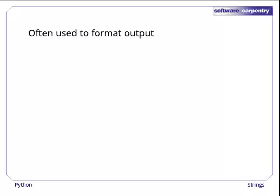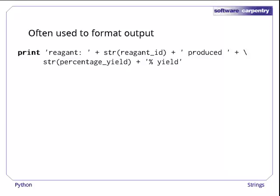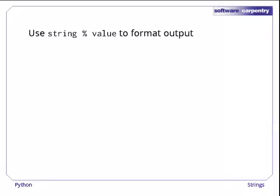Novices often use string concatenation to format output. Here's an example. We concatenate three constant strings and the string representations of two numbers to produce a single string of output. It works, but there's a much better way. In Python, we can use the percent operator to format output. On the left, we have a format string with placeholders where we want to insert values. On the right, we have the values we want to insert.